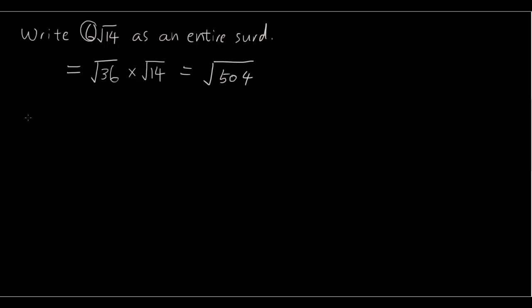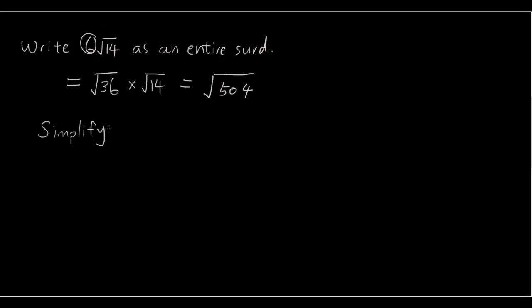You might also get questions where you have to simplify products of surds. So simplify 5 square root of 7 times 2 square root of 14, and if you do the number parts first, so 5 times 2 is 10, pretty much the same way as you do algebra.